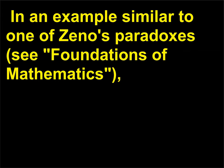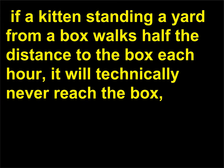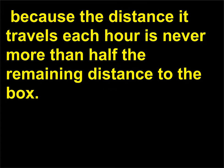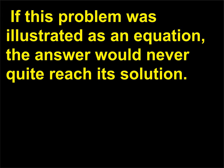In an example similar to one of Zeno's paradoxes, see Foundations of Mathematics: if a kitten standing a yard from a box walks half the distance to the box each hour, it will technically never reach the box, because the distance it travels each hour is never more than half the remaining distance. If this problem was illustrated as an equation, the answer would never quite reach its solution.